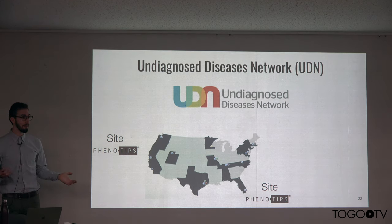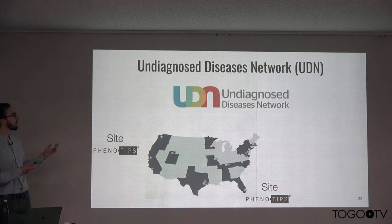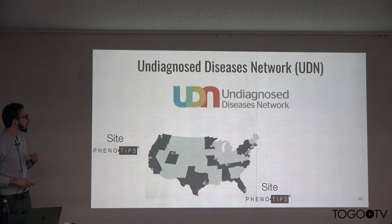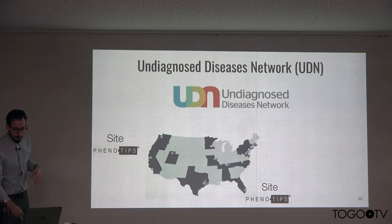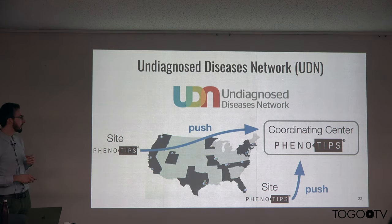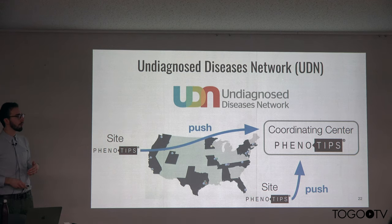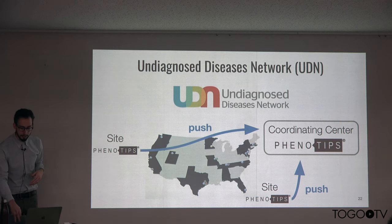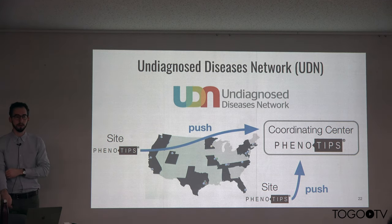The Undiagnosed Diseases Network in the US is now a collection of 13 sites. Some of these sites use Phenotips; they have a coordinating center in Boston which does use Phenotips. As a result, those sites that also use Phenotips or other tools that support that API can push those cases directly to the coordinating center — recording more information locally as part of their workflow and then sending the information the coordinating center needs to that instance, where it can be managed at the level of the entire network.